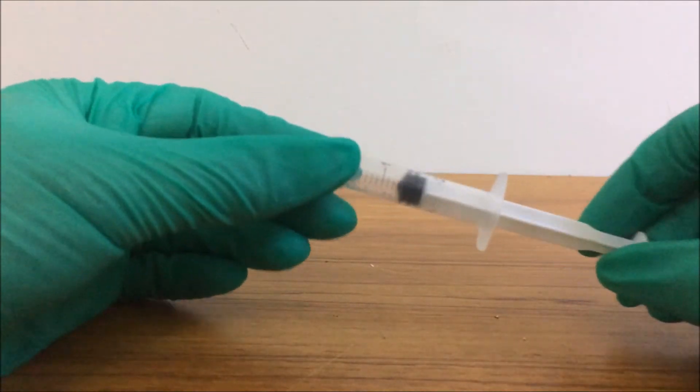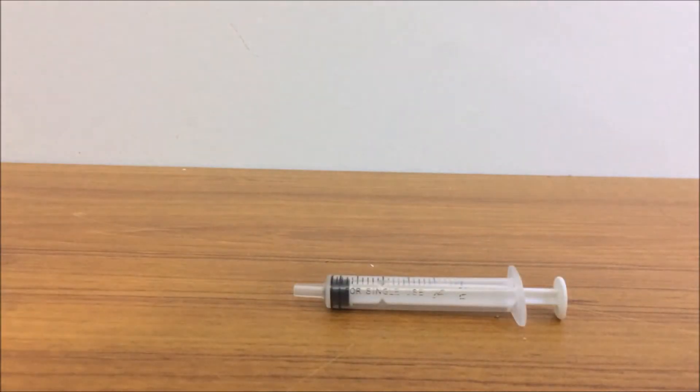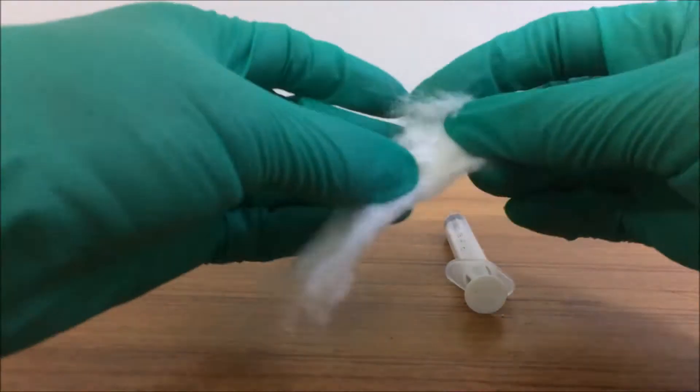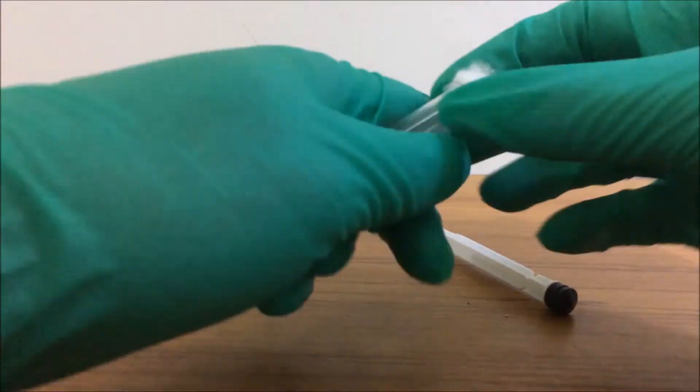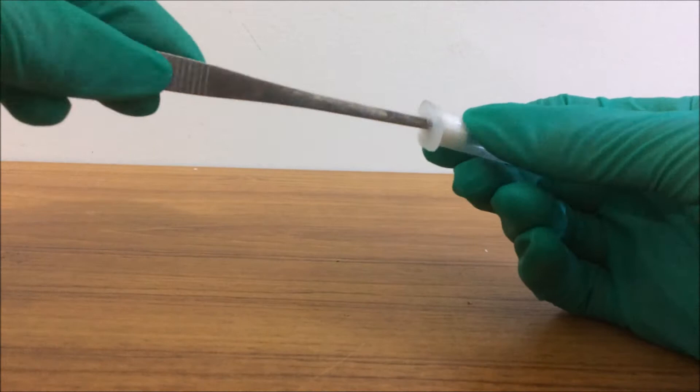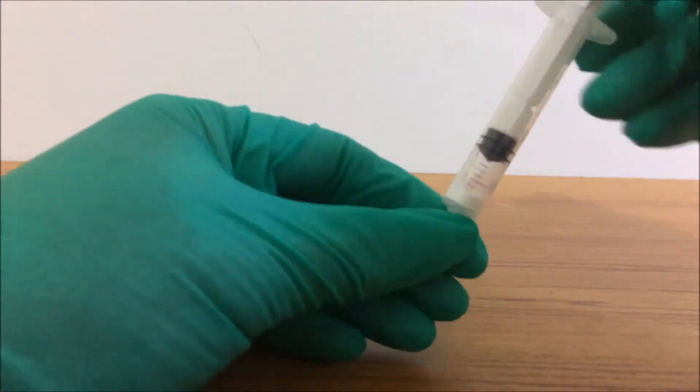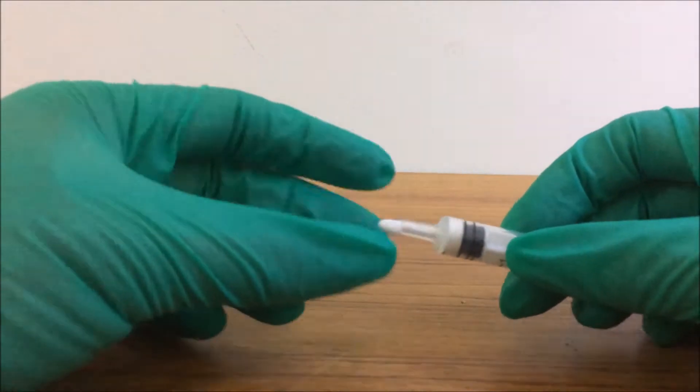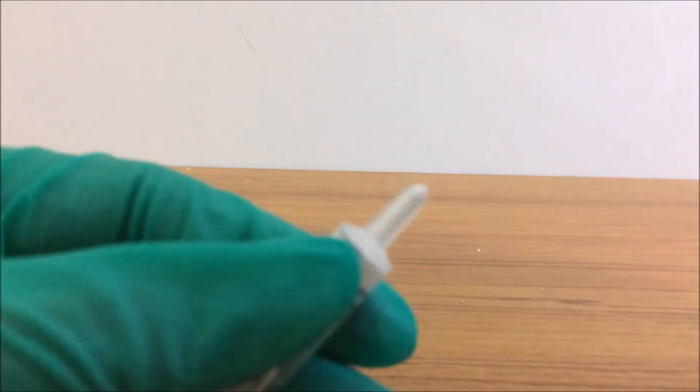I found those syringes with 1.5ml capacity does the job just fine. Then get a piece of cotton and stuff inside of the syringe to reduce the flow. And another piece of cotton is inserted to the tip.